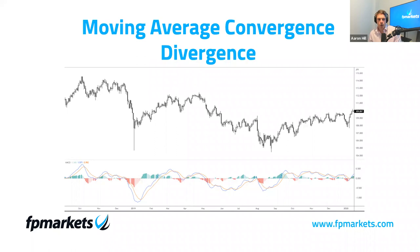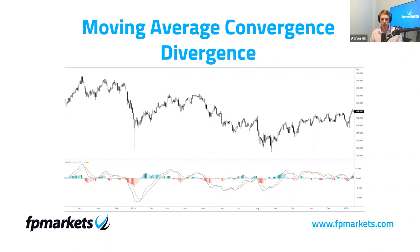The MACD essentially shows the relationship between two moving averages of the underlying price — whether that's a currency pair, cryptocurrency, commodity, or index. The MACD is mostly a lagging indicator, as we are working with moving averages, which by themselves are lagging. A lagging indicator is a tool that provides delayed feedback — it provides a signal following an event, so following price movement. These are commonly used by trend traders to confirm the trend is in play.